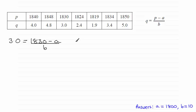From this if I multiply both sides by b and add a to both sides that would give me 3b plus the constant a equals 1830.